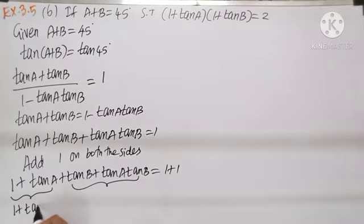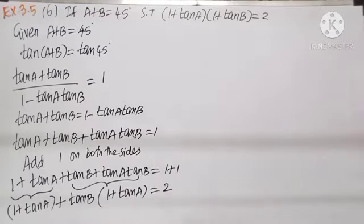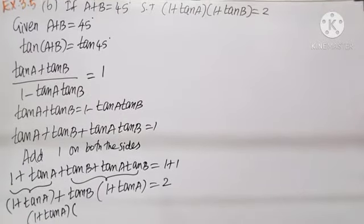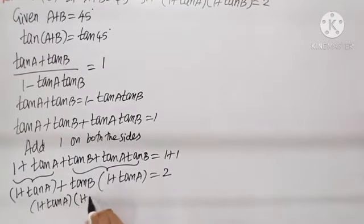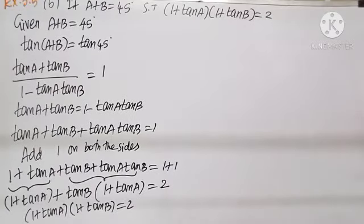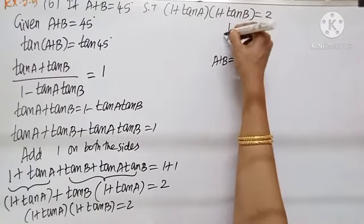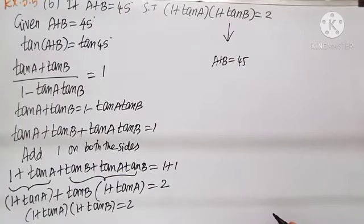Nothing is common in the first two terms, so write 1 plus tan A. In the next two terms, tan B is common: tan B into 1 plus tan A equals 2. Taking 1 plus tan A as common from both terms: 1 plus tan A into 1 plus tan B equals 2. This is the result we need to show. Remember this result for applying it.